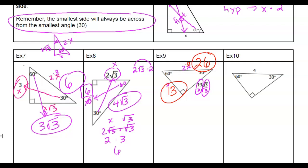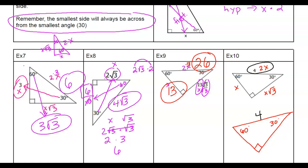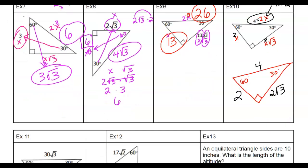Let's look at example ten. I'm given the hypotenuse of 4. So 2x equals 4. Divide by 2, and x equals 2. Everywhere I see an x, I put in 2: the side across from the 30 is 2, and the side across from the 60 is 2 root 3. The ratio still applies, we just might have to use it in a different way.